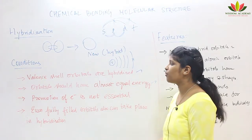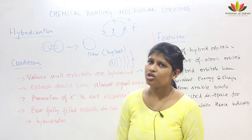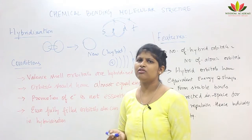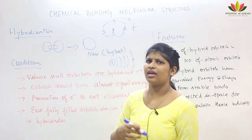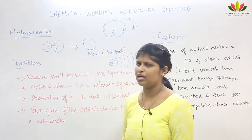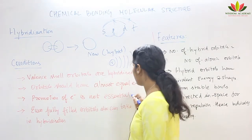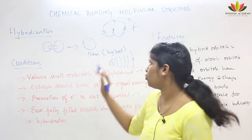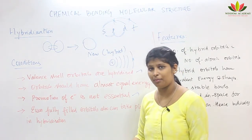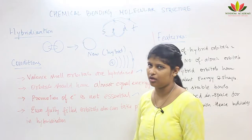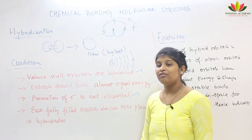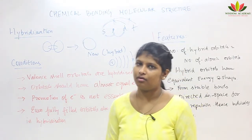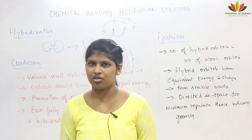Third condition: promotion of electron is not essential. When hybridization is taking place, you don't need to worry about whether an electron can go there or not — just concentrate on the overlapping of orbitals only. Fourth condition: even fully filled orbitals can sometimes participate in hybridization.